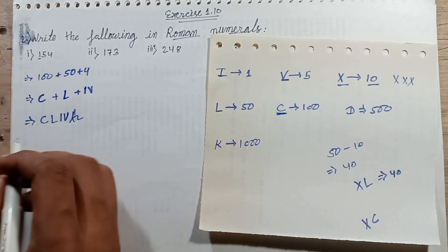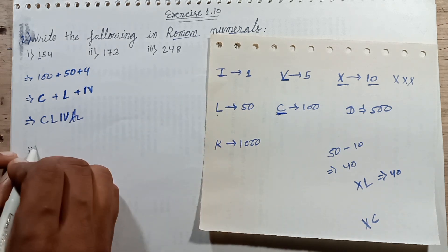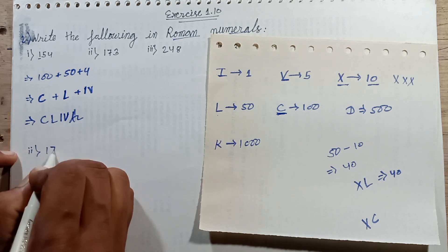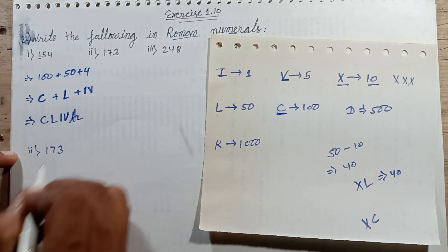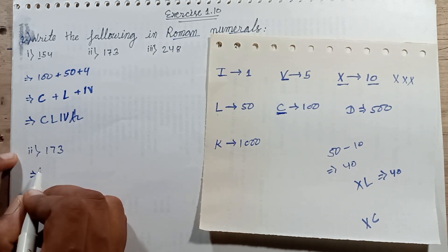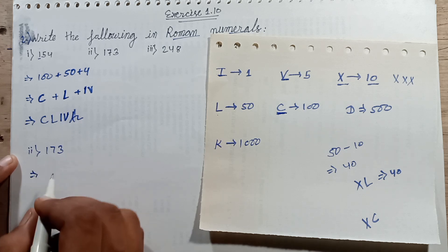Question number 2. Question number 2 is 173. This Roman numeral number, first of all, write in expanded form.